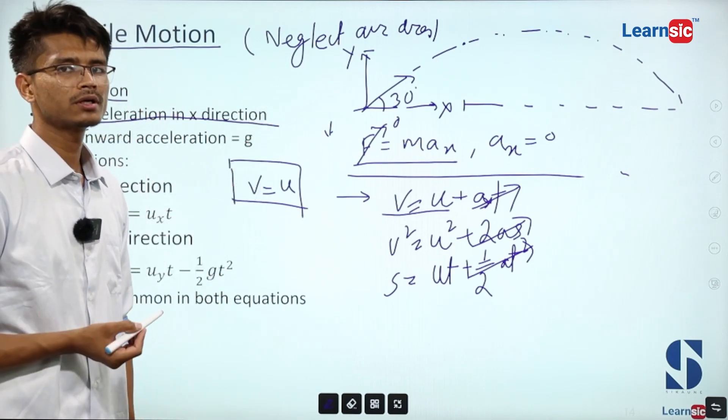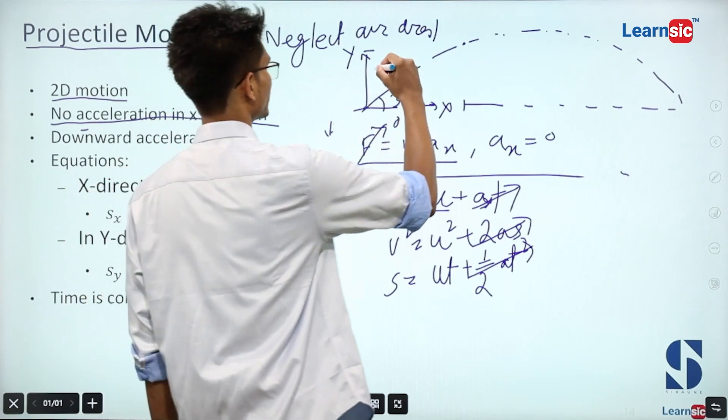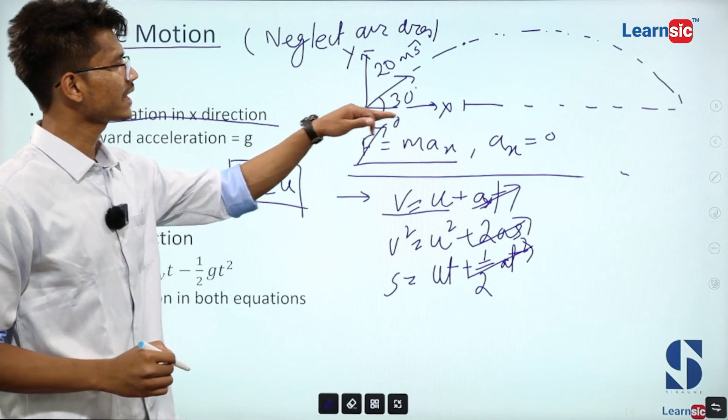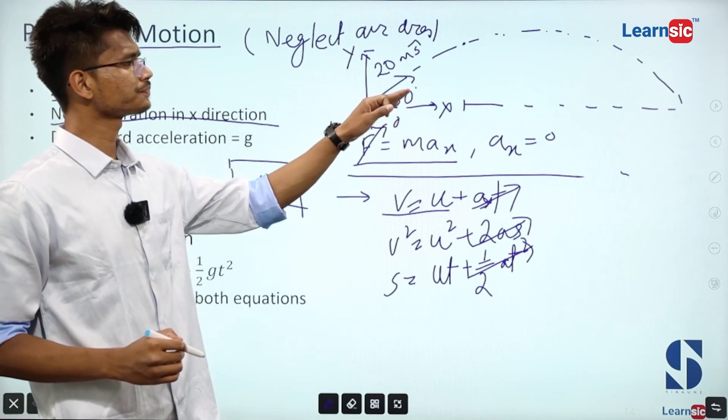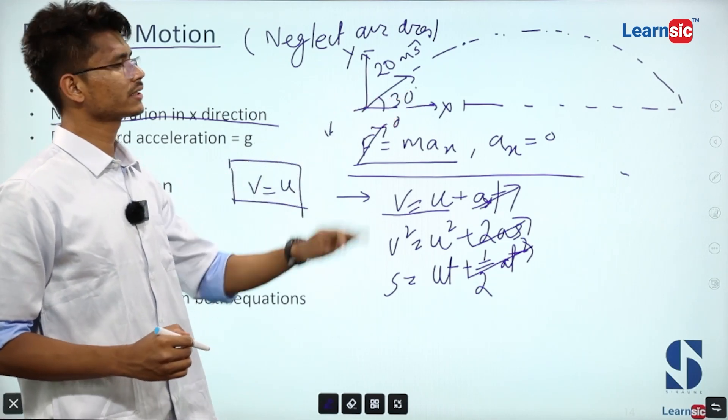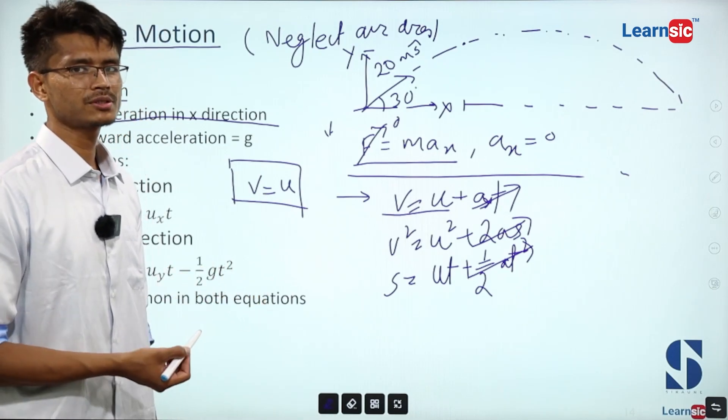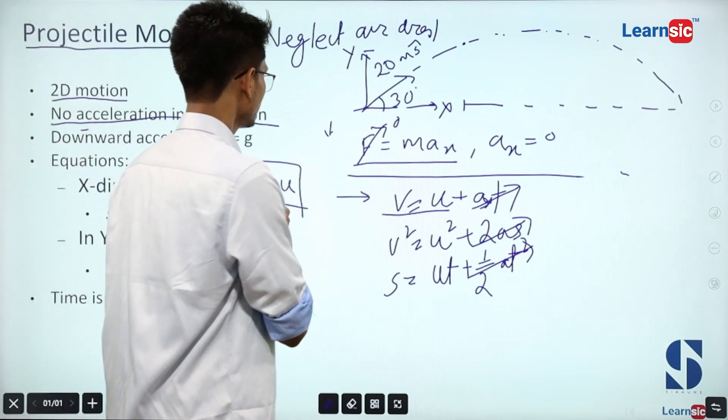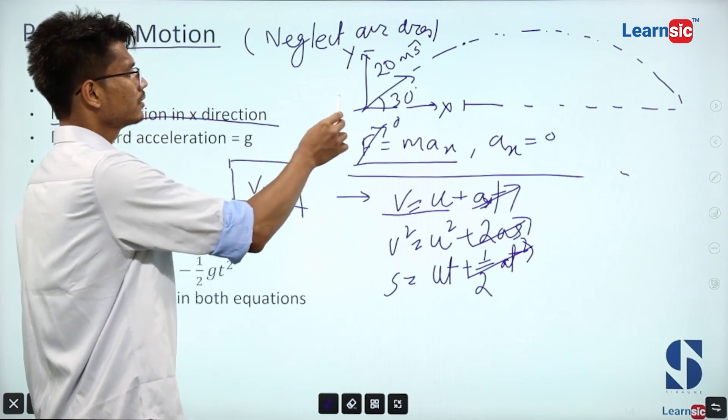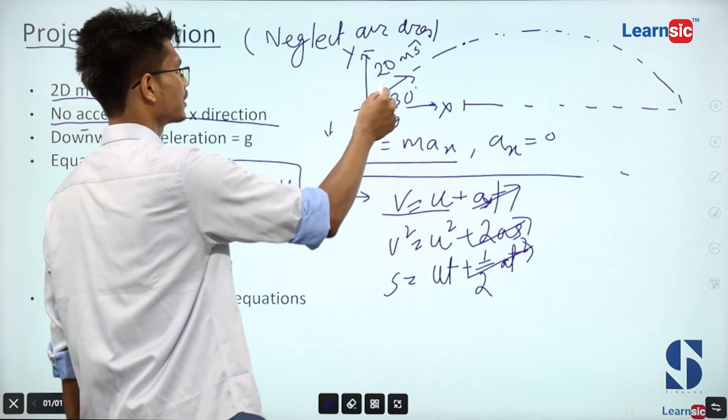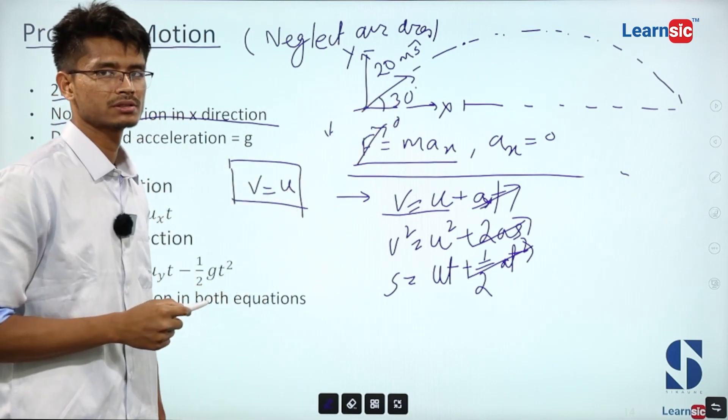For example, this velocity will have two components: along x-axis it's u cos theta, and along y-axis it's u sin theta. Now let's look at a question.